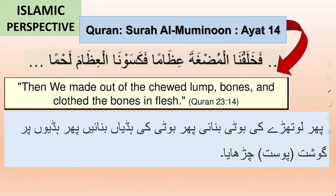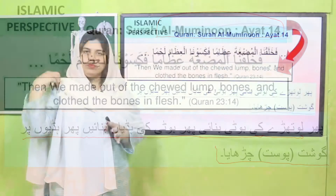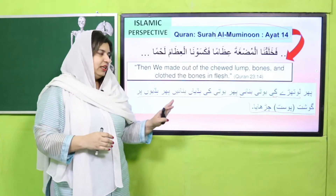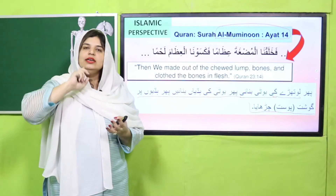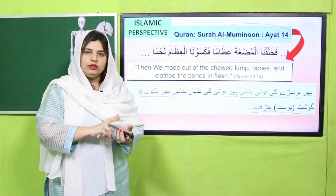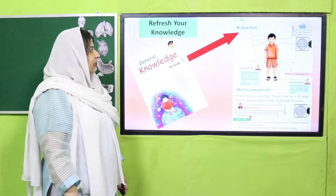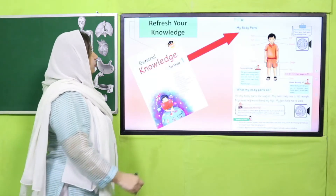We begin with a Quranic reference. In Surah Al-Mominun, Allah Ta'ala has described how He developed the structure of an animal's body. We can see very clearly in the structure of an animal's body how Allah Ta'ala developed it — how the structure of bones is settled upon us, and a complete layer of skin covers that structure.